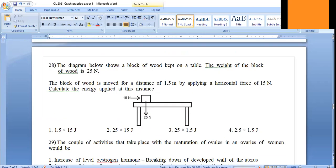Question number 28 asks you - the diagram is given to you. There are three things given as detail: there's a wood block, its weight is 25 Newton, it is moved with a horizontal force of 15 Newton to a distance of 1.5 meters.